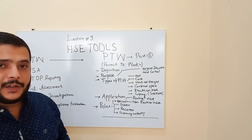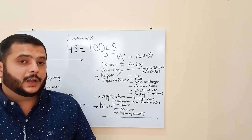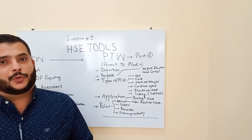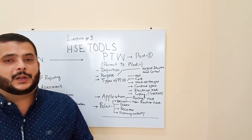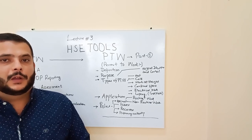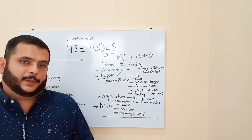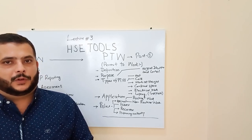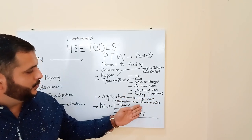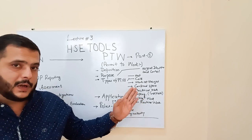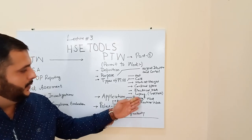Regarding its application, there are two types of work that require a Permit to Work. One is called the routine job and another is the non-routine job. Non-routine jobs are those which you do not continuously or frequently perform inside your workplace area. Routine works are those which you perform every day on a daily basis during your job operations. These will be covered in detail in later lectures.